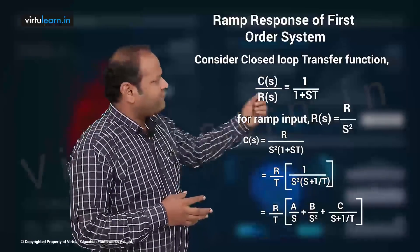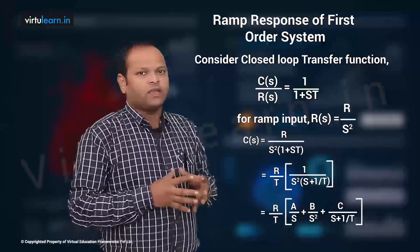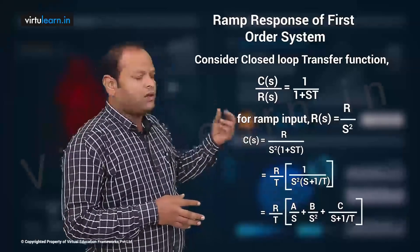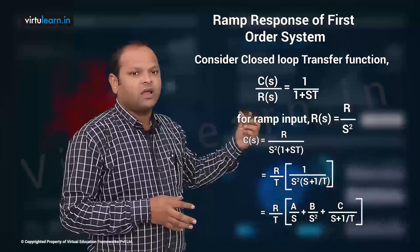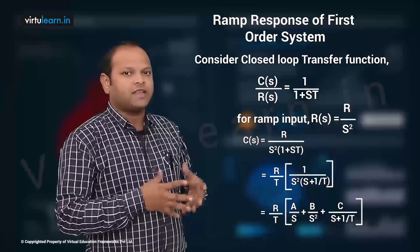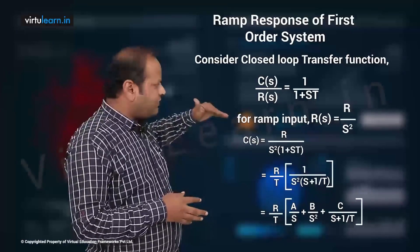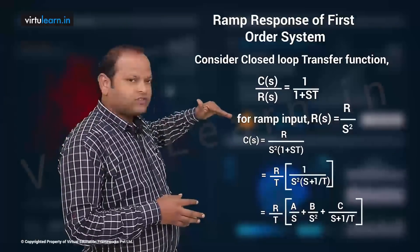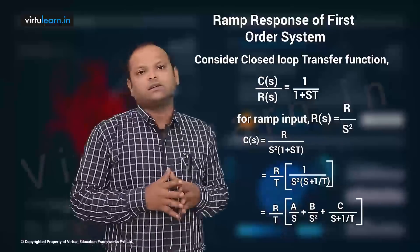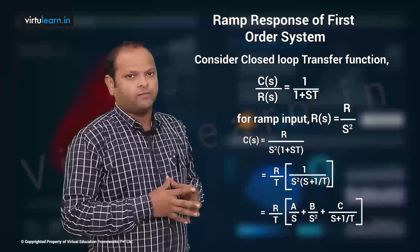We can easily find out the values of A, B, and C. We get A = T, B = 1, and C = T². Therefore we can apply the inverse Laplace transform to get the time domain expression c(t).